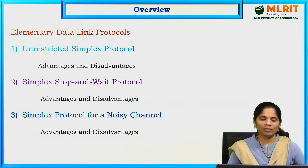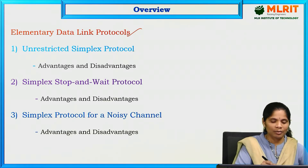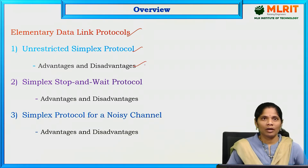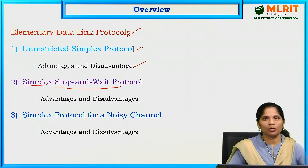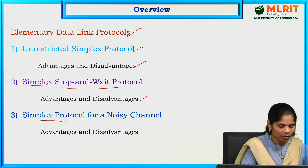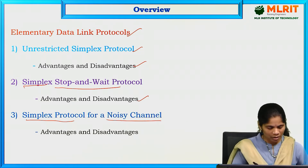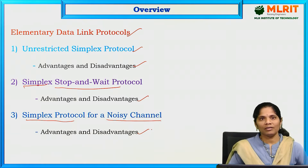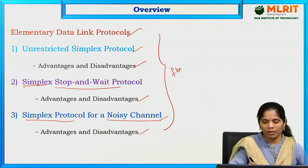In the overview of elementary data link protocols, we are going to talk about what are the elementary data link protocols: unrestricted simplex protocol — including its advantages and disadvantages — then simplex stop-and-wait protocol, its advantages and disadvantages, and next the simplex protocol for the noisy channel. These all come under the flow control mechanism.